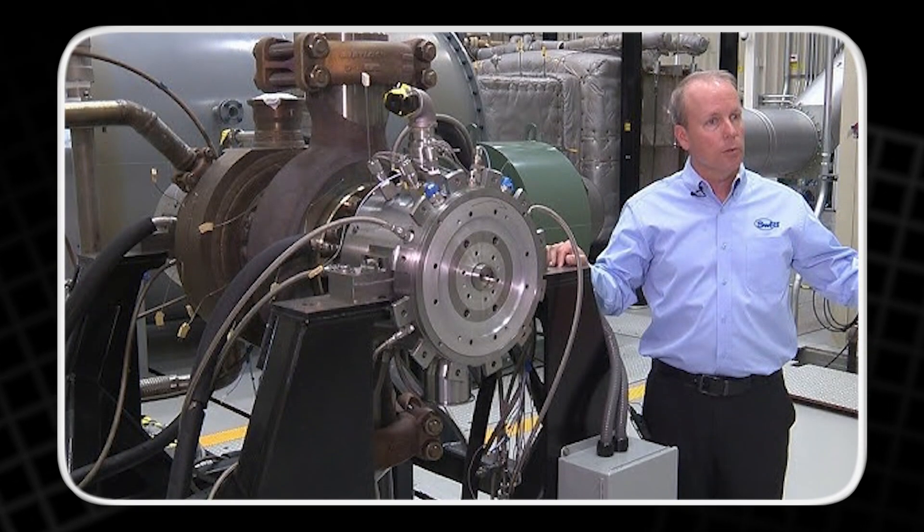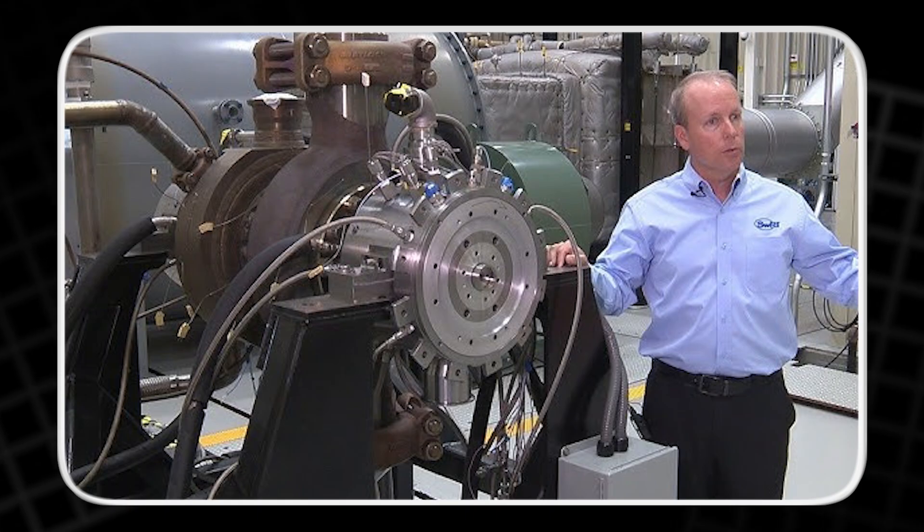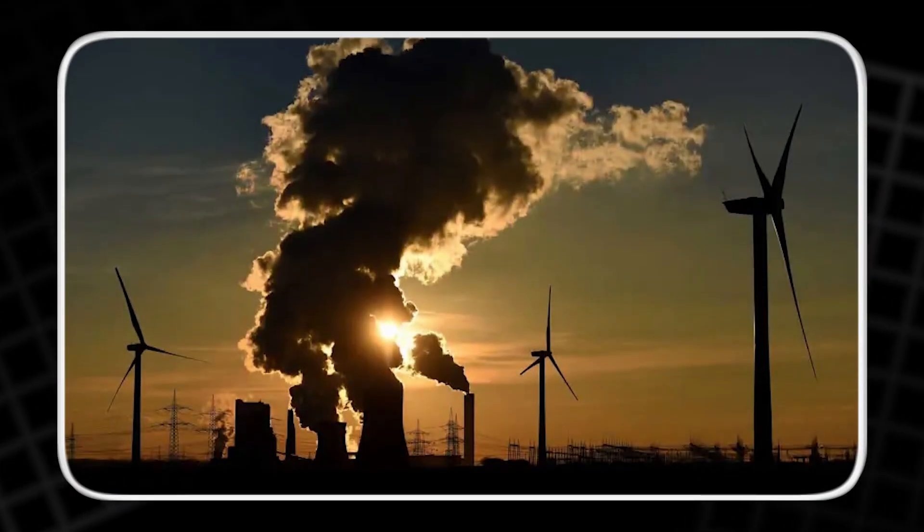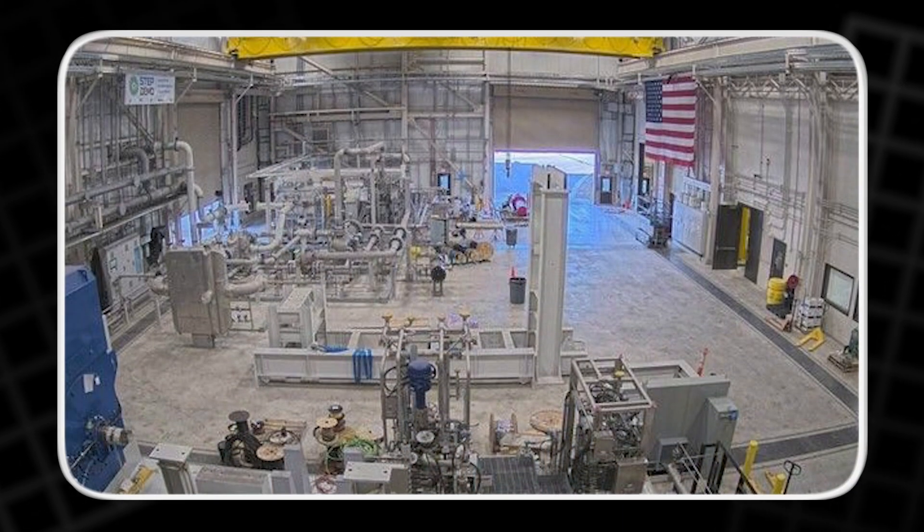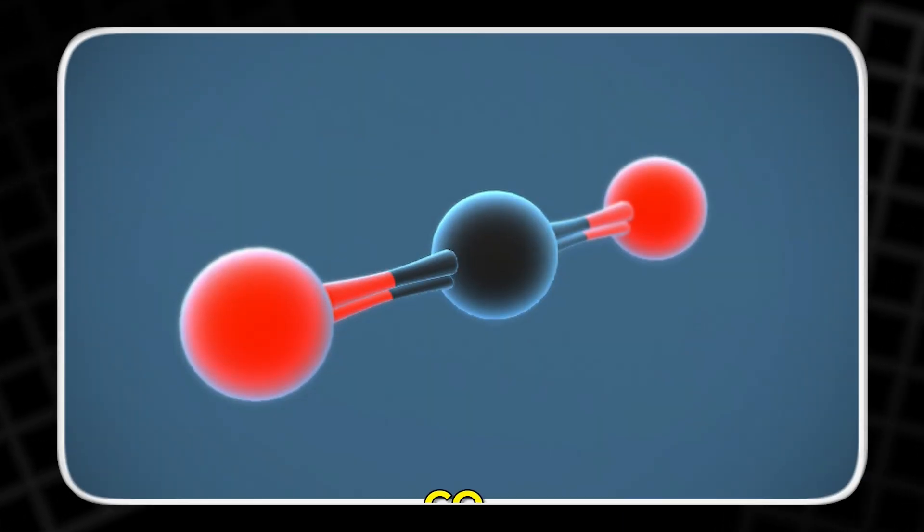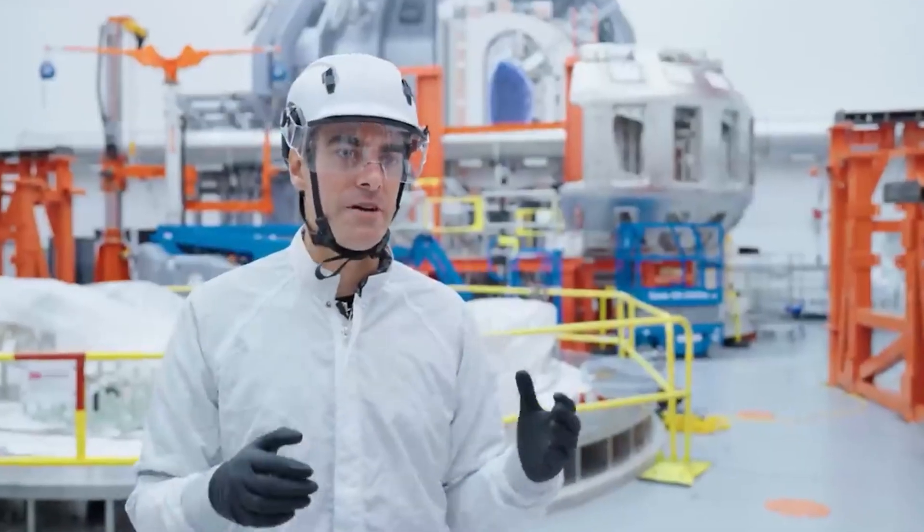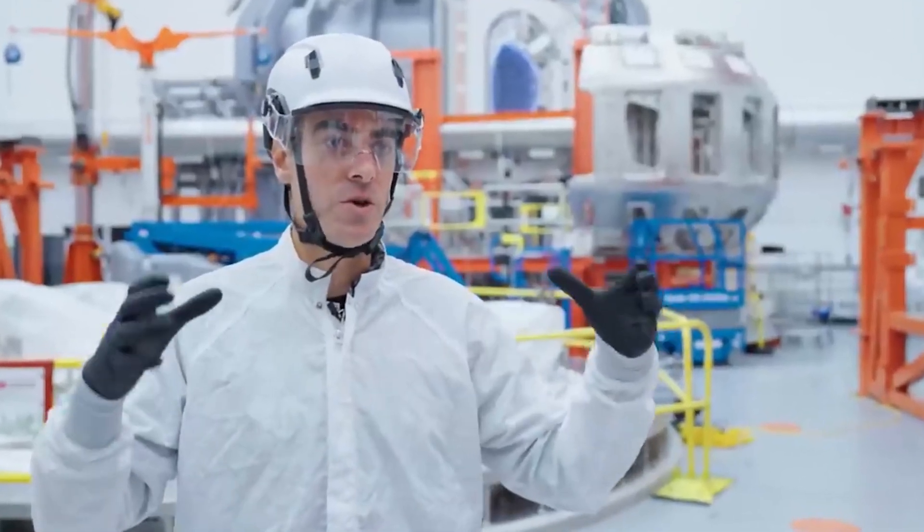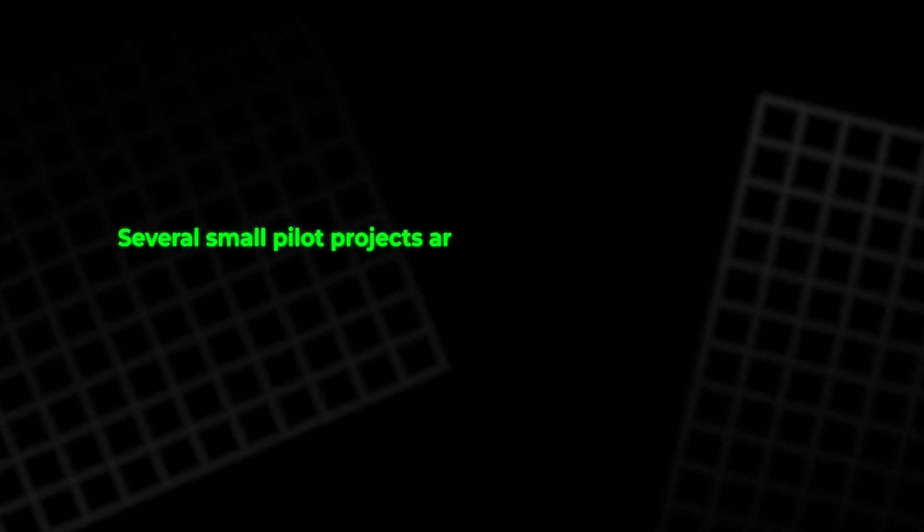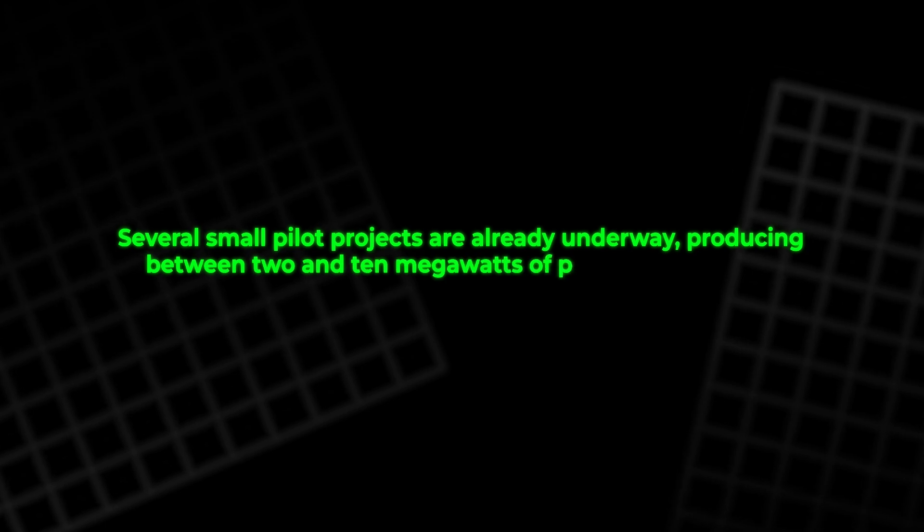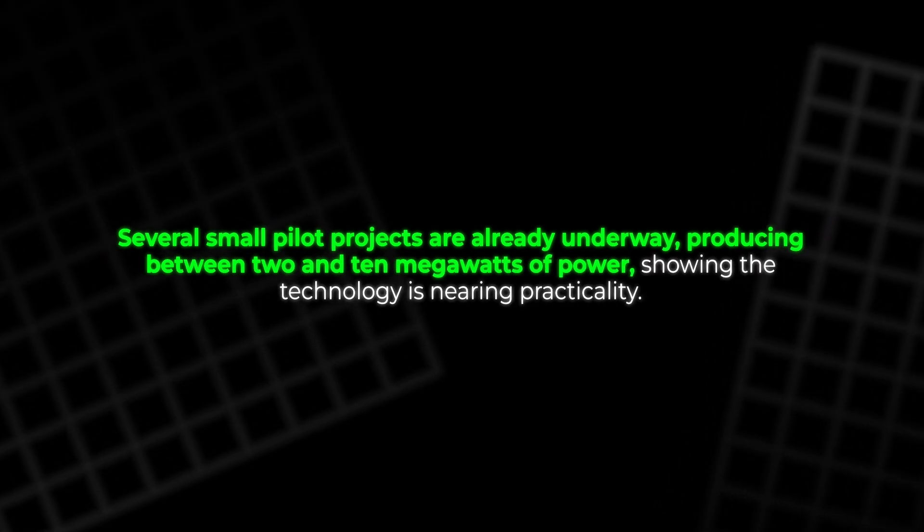A related idea is oxycombustion: burning natural gas with pure oxygen instead of air. This produces a concentrated exhaust of carbon dioxide and water vapor, making it easy to capture and store emissions. However, CO2 at high temperatures can corrode turbine components. Engineers are developing new nickel-based super-alloys and thermal barrier coatings to combat this. Several small pilot projects are already underway, producing between 2 and 10 megawatts of power, showing the technology is nearing practicality.